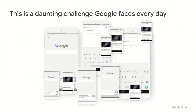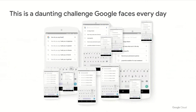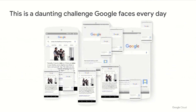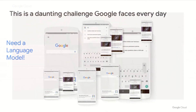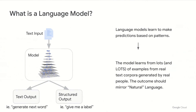This is a daunting challenge that Google faces every day with billions of daily search queries. A good fraction of these queries are brand new and have never been seen by Google before. So we need a language model. A language model learns to make predictions on text input based on patterns it has been exposed to, learning from lots and lots of examples generated by real people. The outcome should mirror natural language and give us some information — whether that be text output or a signal that can provide insight.